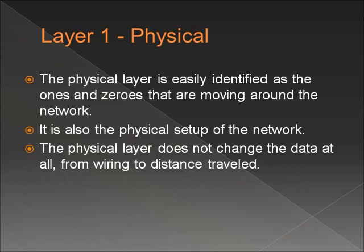The physical layer is the first layer in the OSI model. It is relatively easy to understand compared to the other layers. This layer is made up of the physical components that provide the means to transmit data. Instead of using data packets to transfer data, it prefers to transmit raw bits. It's basically the unorganized kid at school with all of his papers in a single pile.